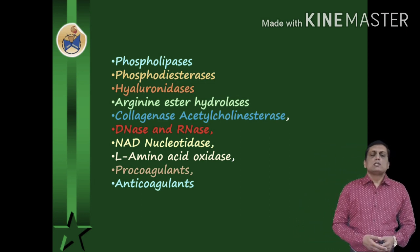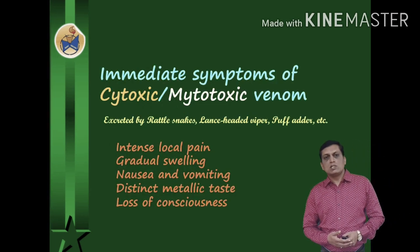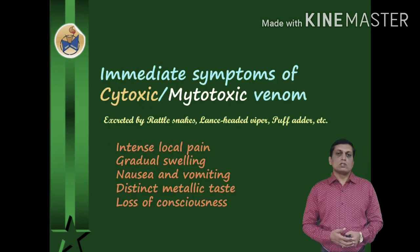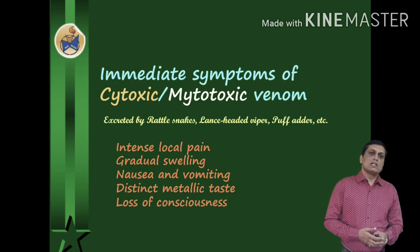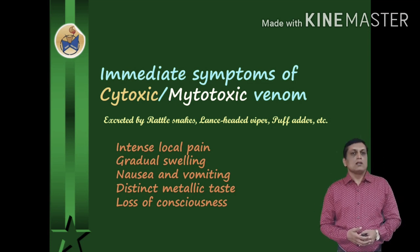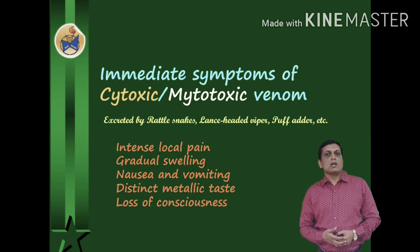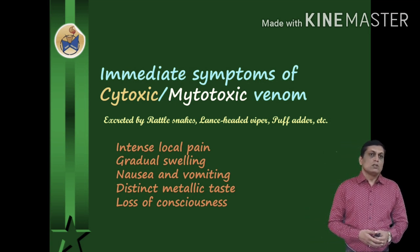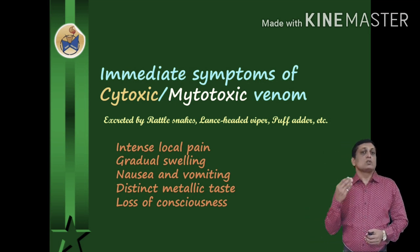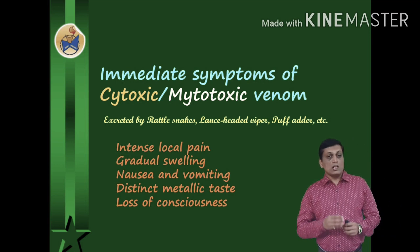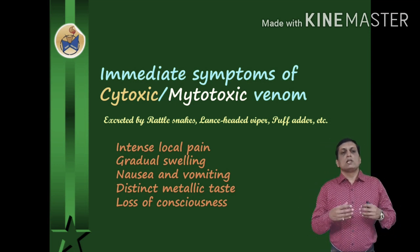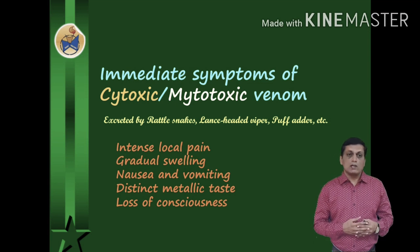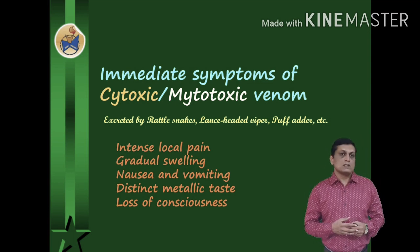Now we will see some immediate symptoms of cytotoxic and mitotoxic venom, which is secreted by rattlesnakes, lance-headed vipers and puff adder-like snakes. The symptoms include intense local pain, gradual swelling, nausea and vomiting, a metallic taste in the mouth, and loss of consciousness.